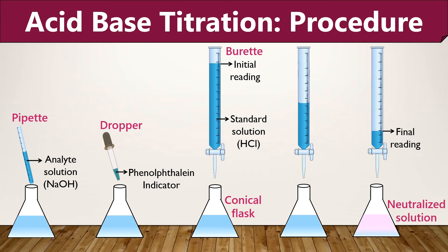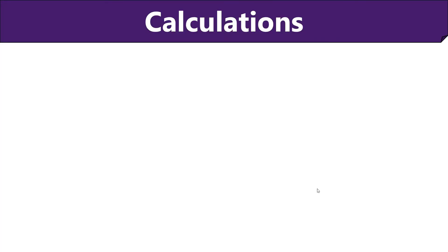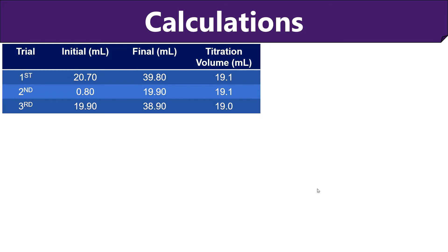Now note down the final volume of the titrant. You have to repeat this procedure two more times to get accurate results. Here we have taken an example of HCl and NaOH. HCl being a strong acid and NaOH being a strong base, we can use phenolphthalein indicator. Now suppose we have used 0.1 molar concentration of HCl as a standard solution and the concentration of NaOH base is unknown but the volume is 25 ml. To calculate the unknown concentration of NaOH, first we have to calculate the titration volume — it is the volume of titrant added to the analyte solution. The value of titration volume can be obtained by subtracting the final value of titrant from the initial one.